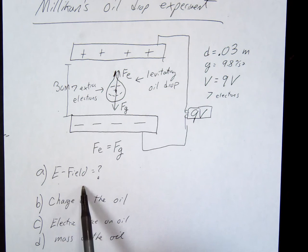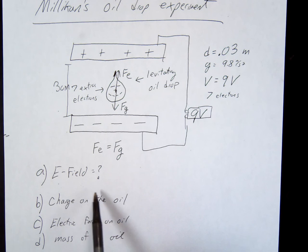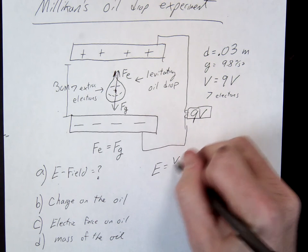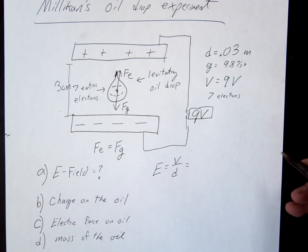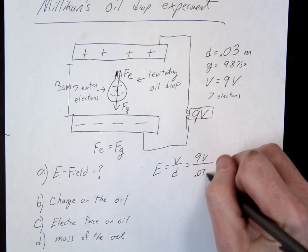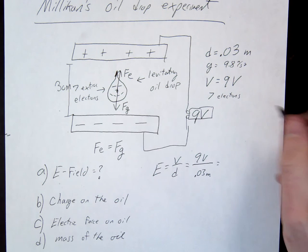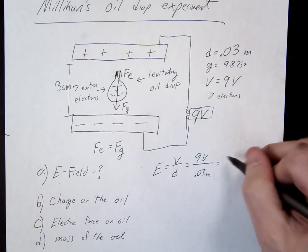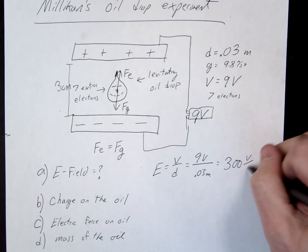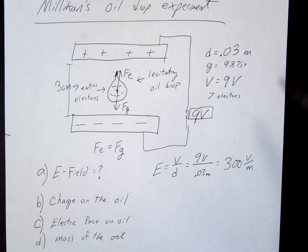First, electric field. We have two main equations: F equals EQ, and V equals ED. V equals ED works for us here. Rearranging, E equals V over D. So we have 9 volts divided by 0.03 meters, which gives us 300 volts per meter — or newtons per coulomb. Remember there are two possible units.